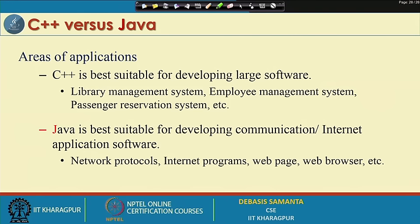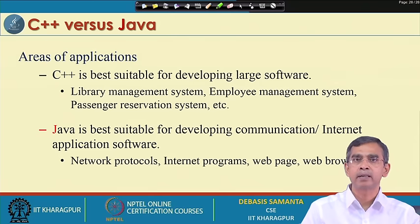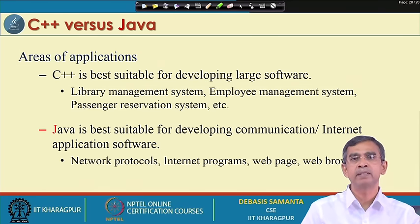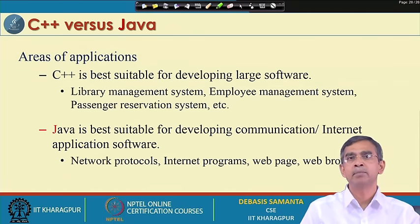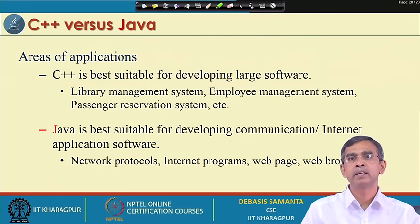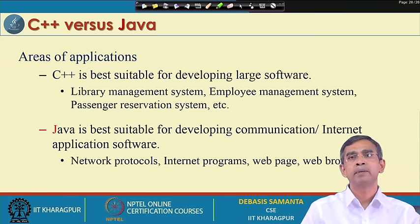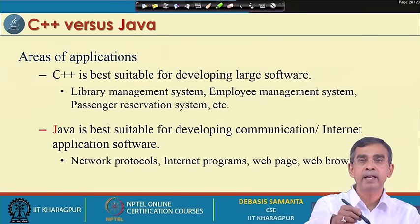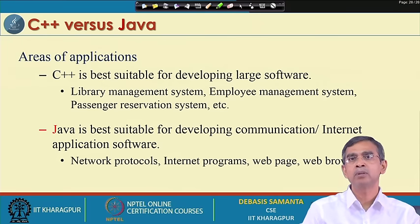For example, if you want to develop networking technology and develop protocols in networking, you should use Java instead of C++. For internet programming - how the browser works, how the remote desktop can work - Java is best suitable. If you want to develop web pages, which is very common nowadays, and many organizations maintain web pages with information and services such as banking, the web page you can develop using Java. Web browsers that browse web pages available on the internet can also be developed using Java programming, and in C++ these are sometimes not possible or infeasible.